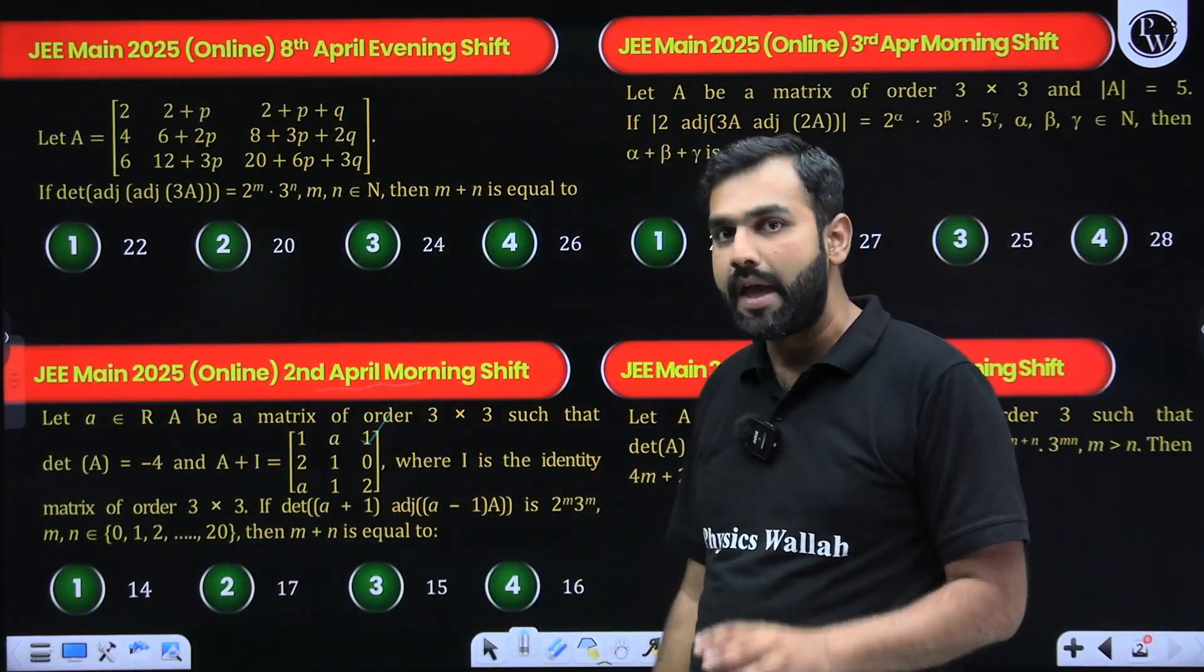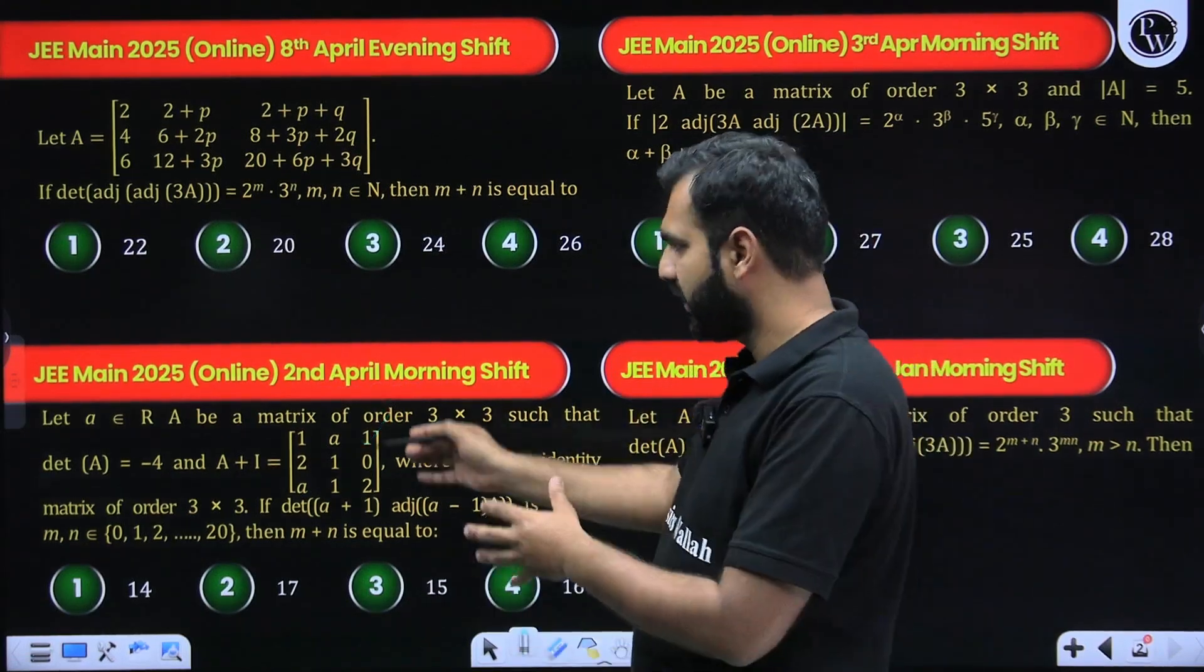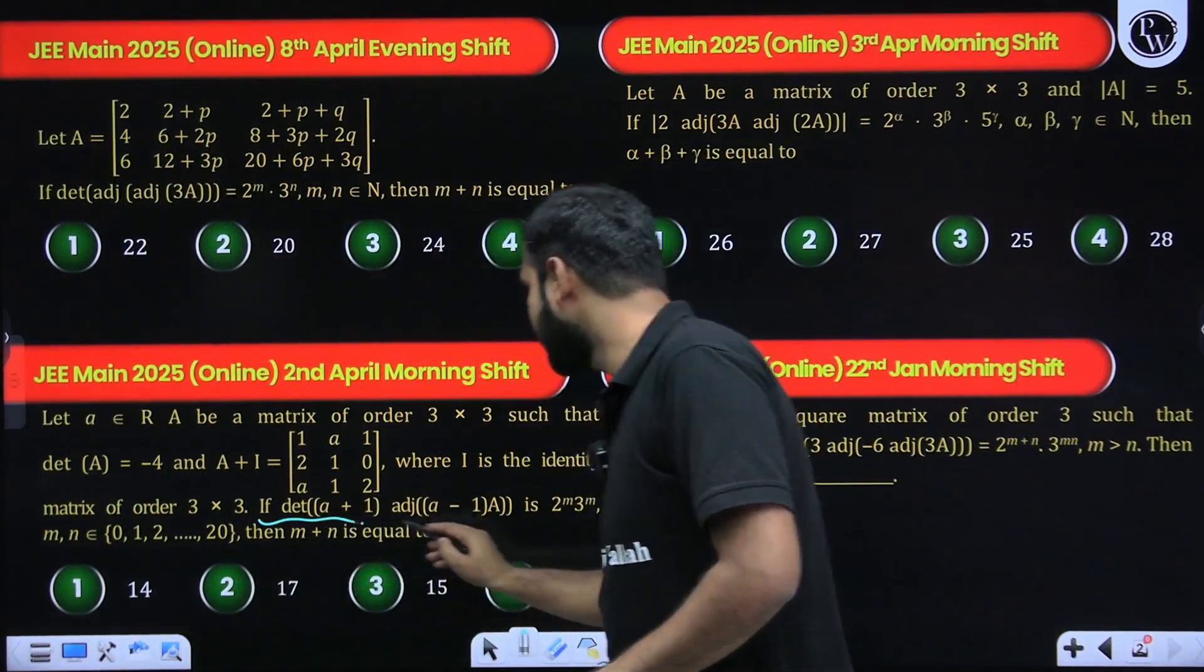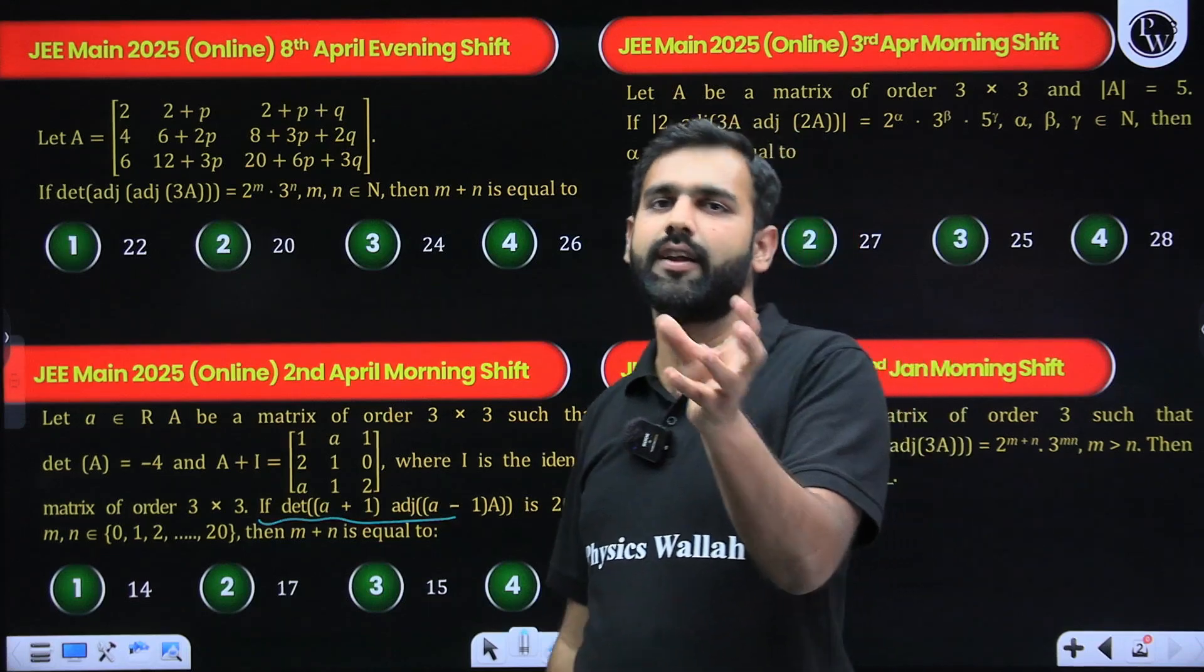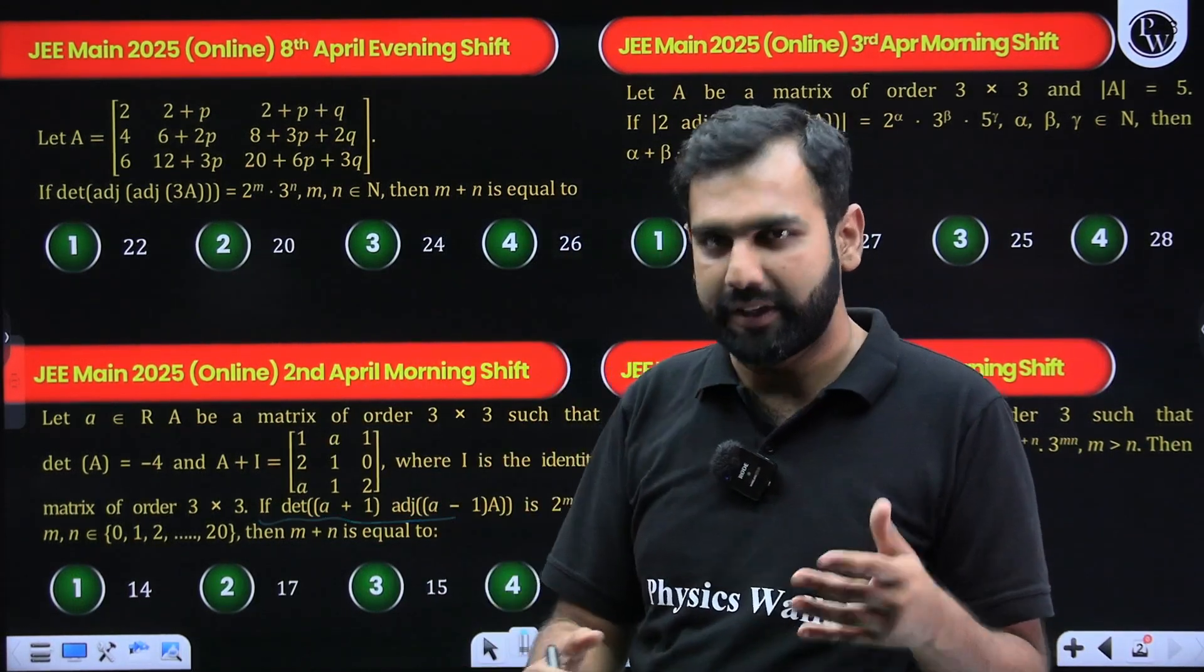You are given a matrix, and based on that matrix you can figure out its determinant by using some operations which are given in the question. Afterwards, of course, you are asked to figure out the determinant of some scalar of adjoint of that matrix, which you know can be figured out with the help of a formula.